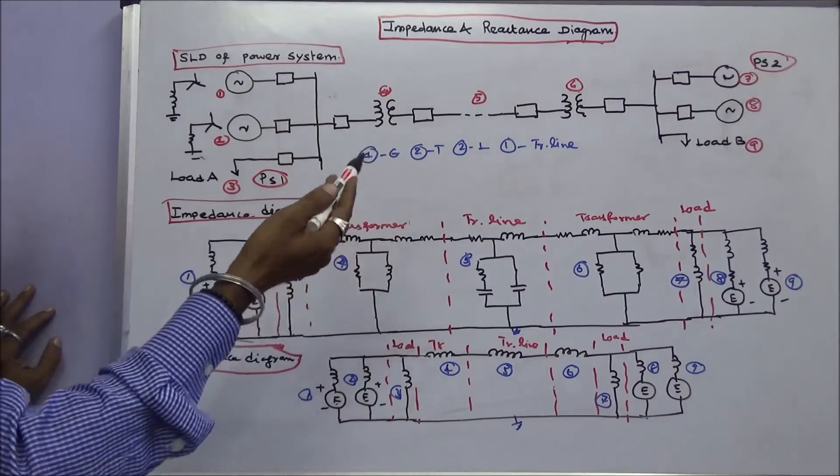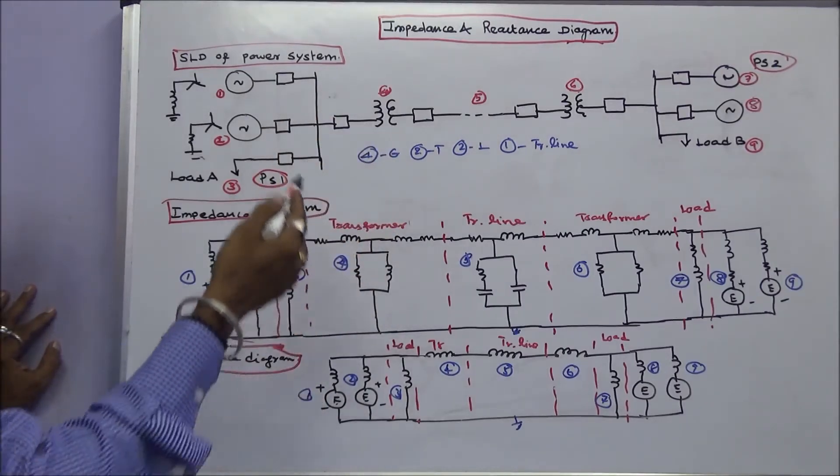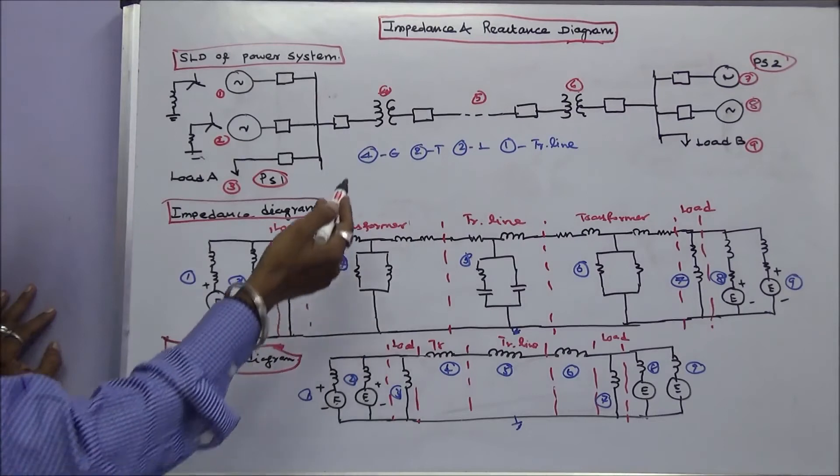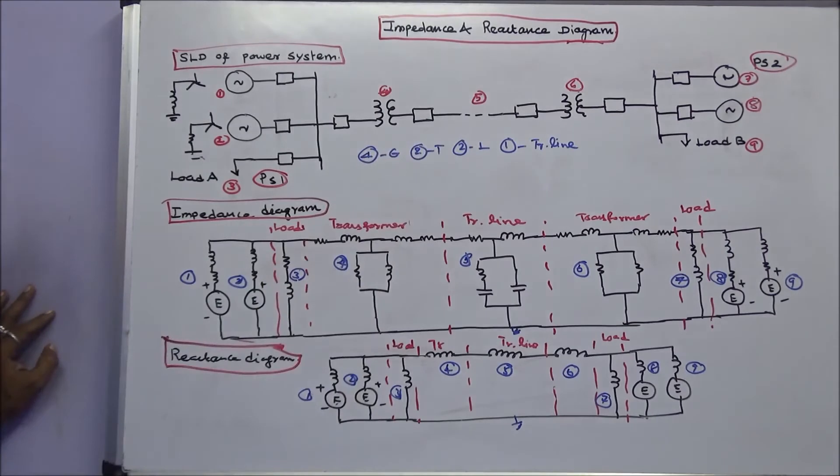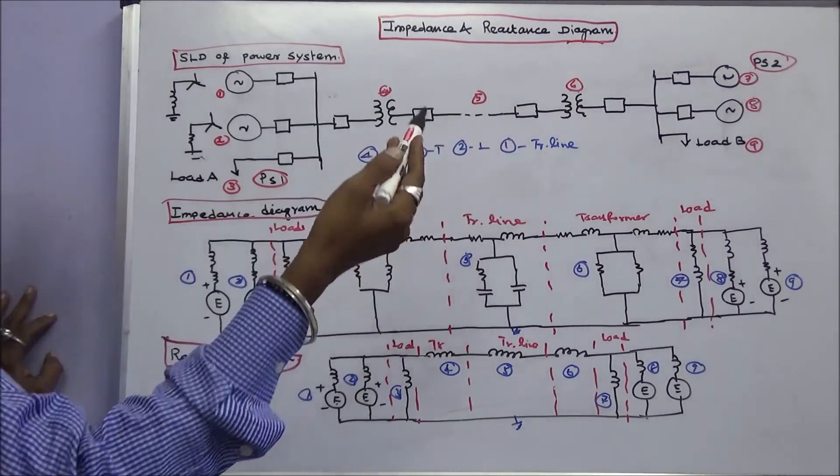This is a typical single line diagram of a power system. This power system consists of four generators, two transformers, two loads, and one transmission line. Total number of components are nine.